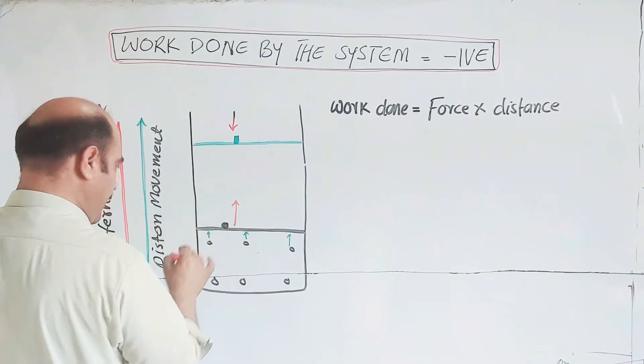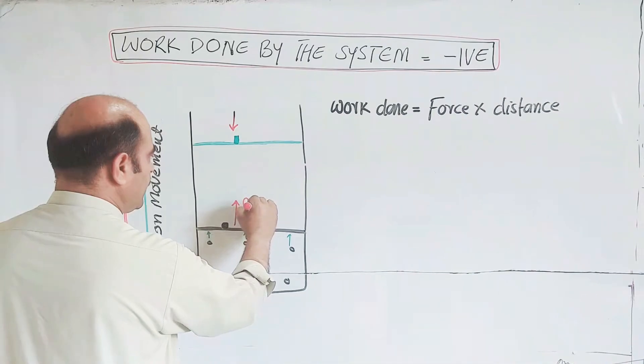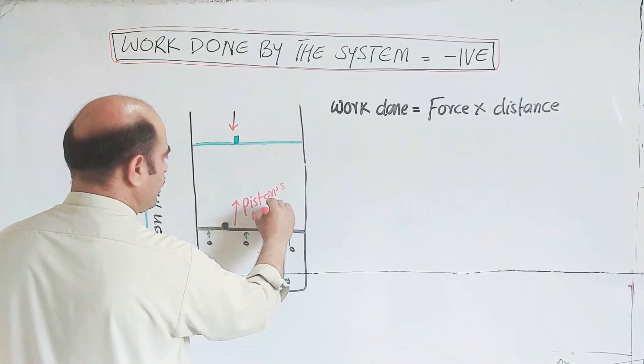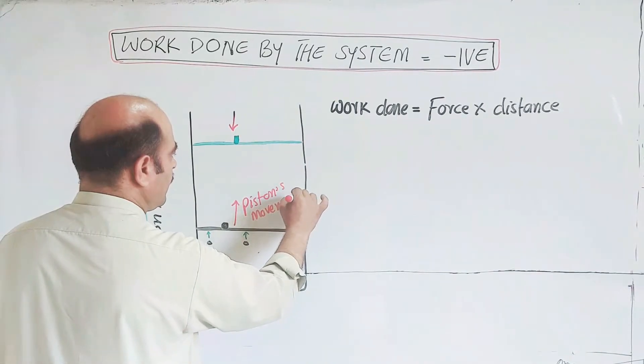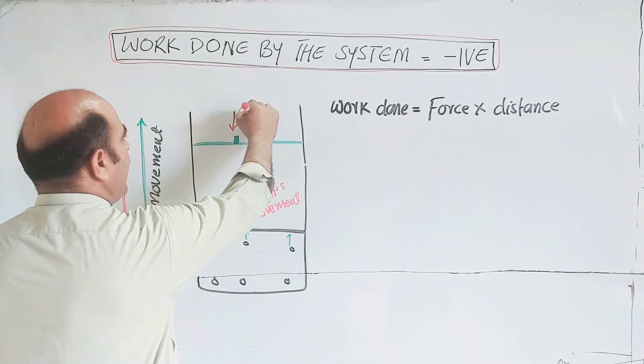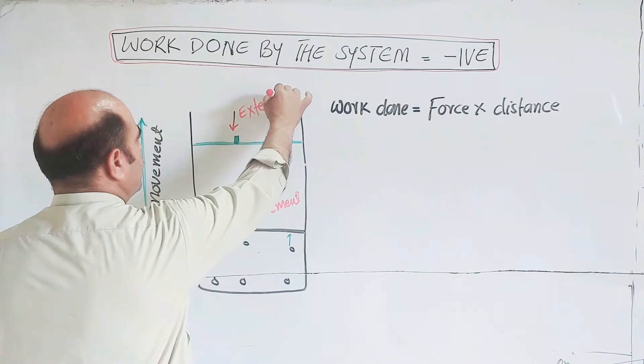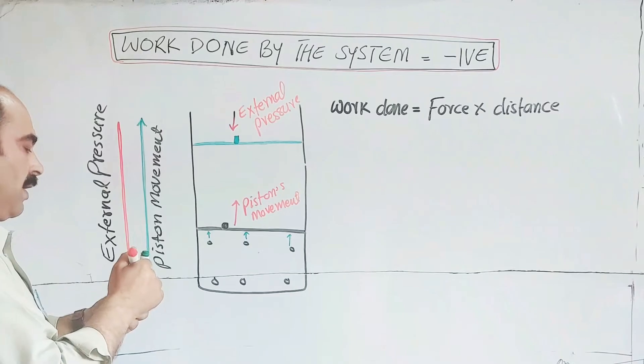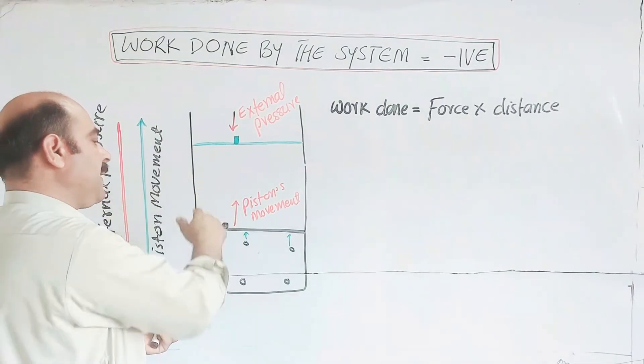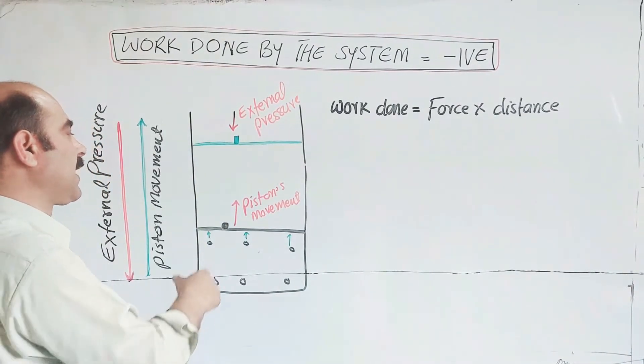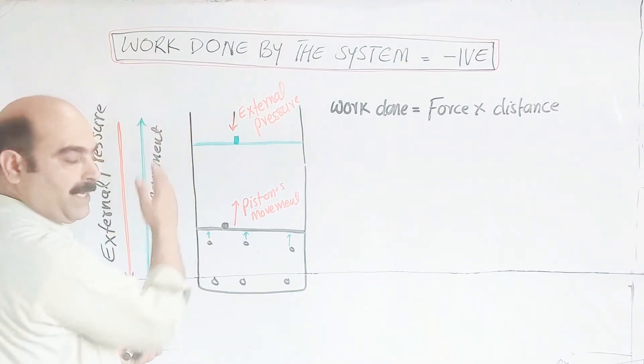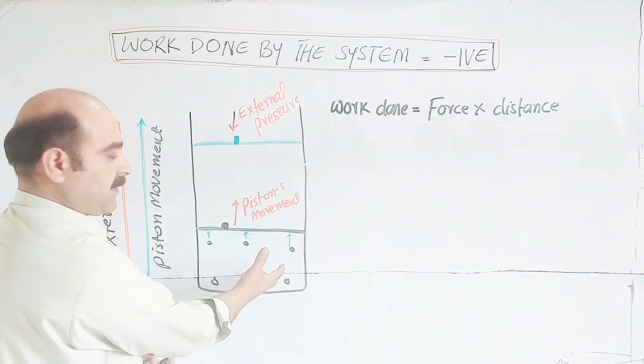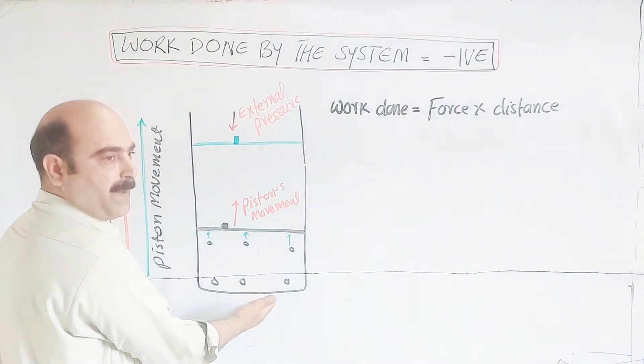External pressure acts downward, piston movement is upward. This is piston movement indication, and this is external pressure direction. External pressure.